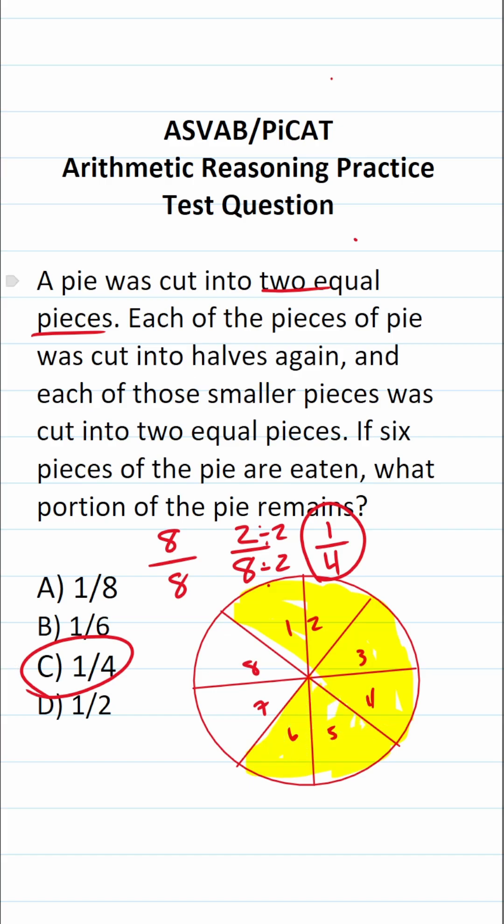And as I mentioned, if six of the eight slices have been eaten, that means two of the eight slices remain. And as we saw, two over eight reduces to one fourth. All right, so that is that one.